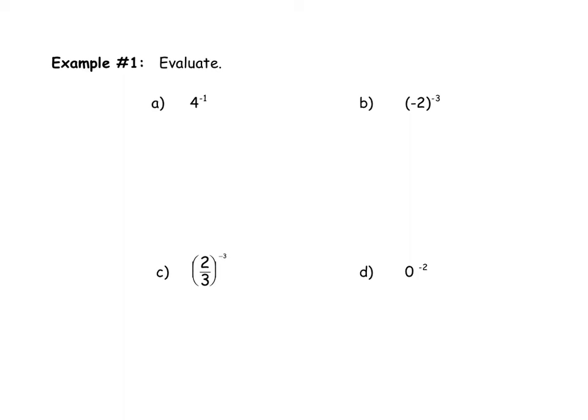For example A: whenever I see a negative exponent and the question says evaluate, I need to make that exponent positive. The base here is four, which I can write as four over one. Taking the reciprocal gives me one-quarter, which makes the exponent positive one. Raising anything to the power of one doesn't change the base, so this simplifies to one-quarter.